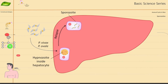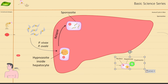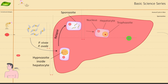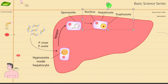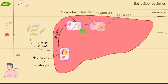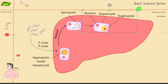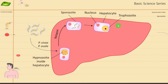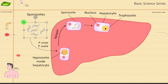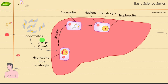After sporozoites enter the hepatocytes, there are changes that can happen and the parasite can become another form called the trophozoite. The trophozoite is also known as the feeding stage — it becomes more rounded from the elongated state. The elongated state is the motile state where it can move through the circulatory system and reach the liver.